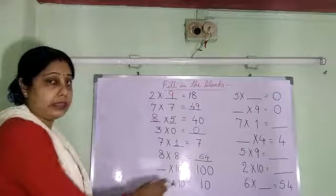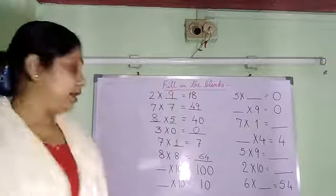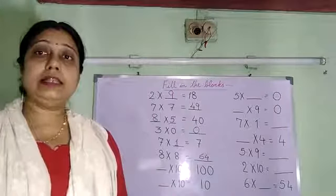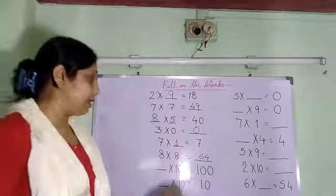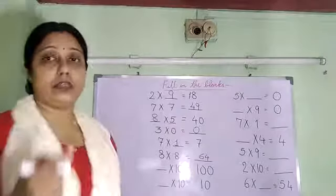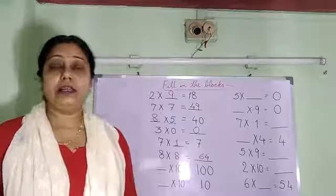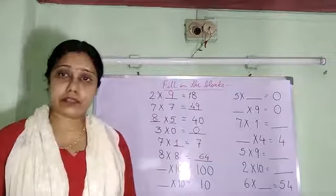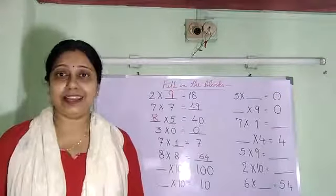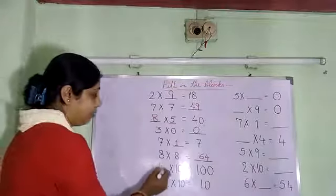Next question: 10 multiplied by how much gives the answer 100? We have to read the table until the result 100 is coming. We know that 10 10s are 100. Reading the table of 10: 10 1s are 10, 10 2s are 20, 10 3s are 30, 10 4s are 40, 10 5s are 50, 10 6s are 60, 10 7s are 70, 10 8s are 80, 10 9s are 90, and 10 10s are 100. So we will fill here 10.